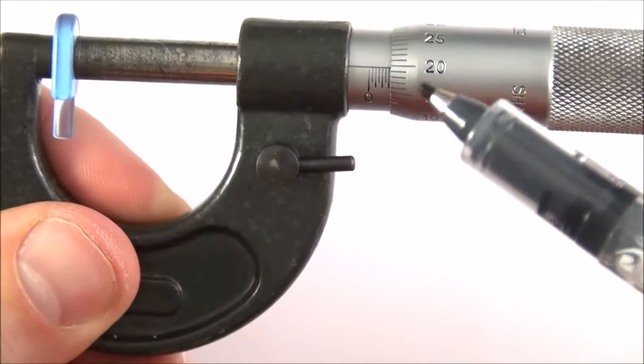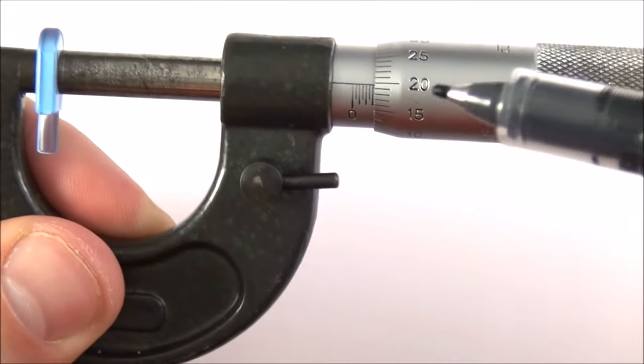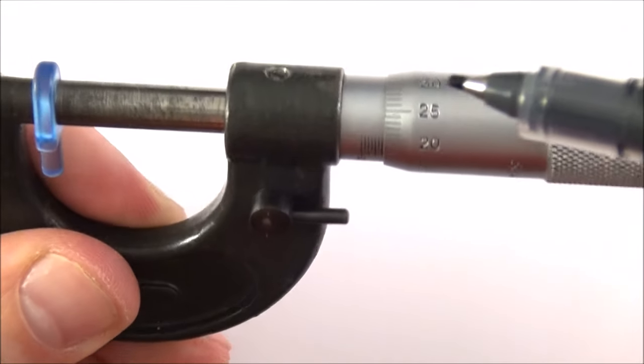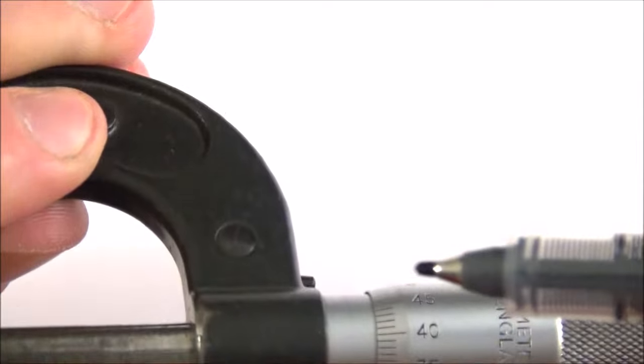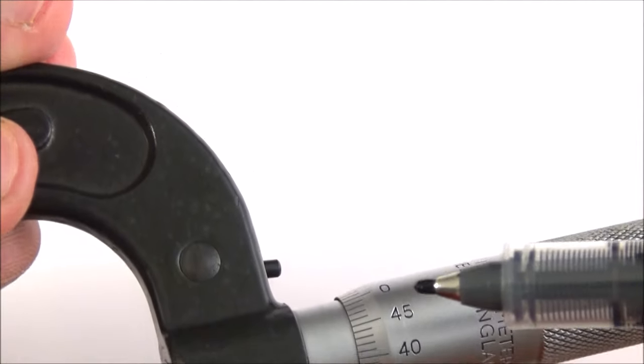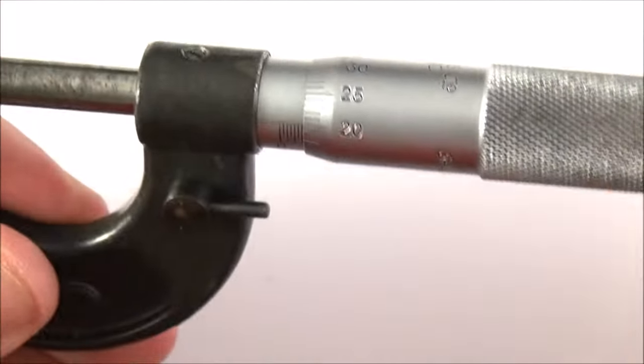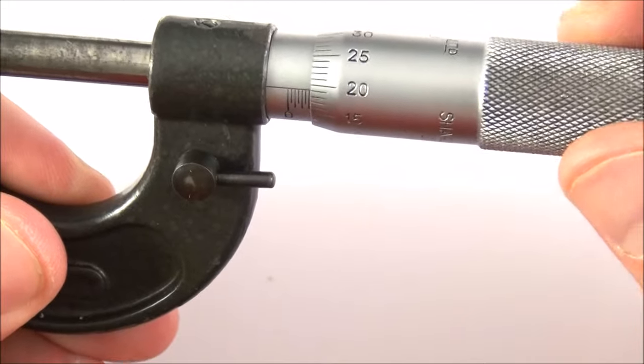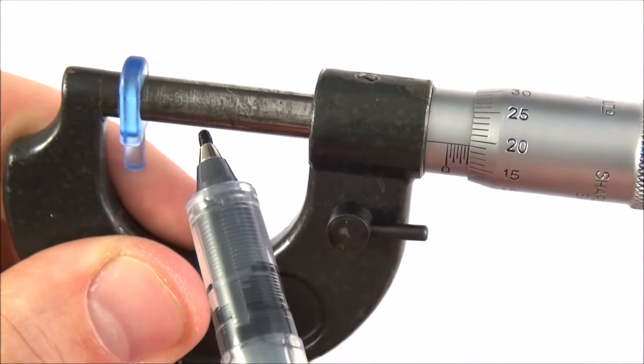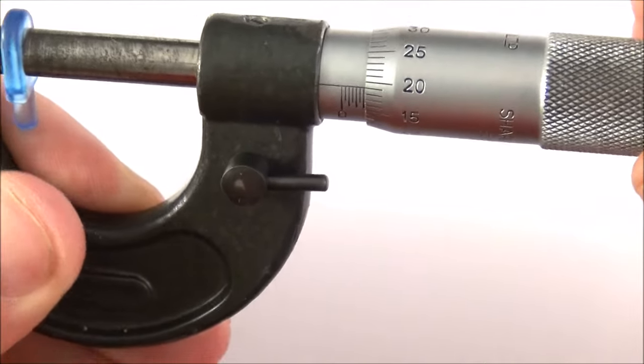So if we just zoom in on this, this is the reading that we see on the micrometer. A point to note is that these numbers around this part go up to 0.40, 0.45, and then back to zero. What that means is that one rotation of this part moves this part in and out by half a millimeter, and that's really important to note.